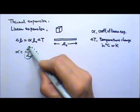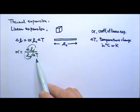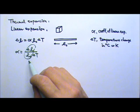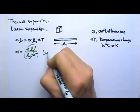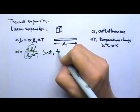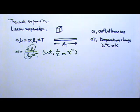This means that alpha gives us a fractional change in length per degree of temperature change. The units for delta L and L0 are the same, so the unit for alpha would be 1 over degree Celsius, or degree Celsius to the negative first degree.